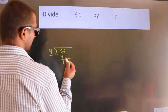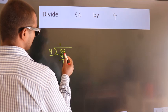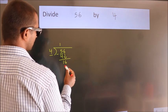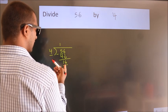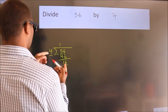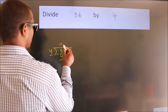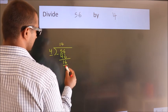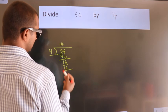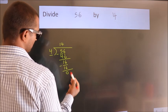After this, bring down the beside number. So 6 comes down, giving us 16. When do we get 16 in the 4 times table? 4 fours are 16. Now we subtract. We get 0.